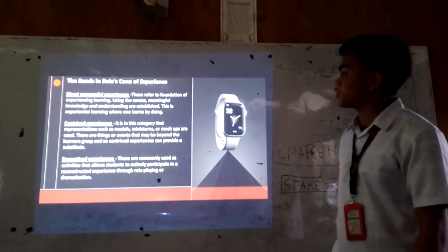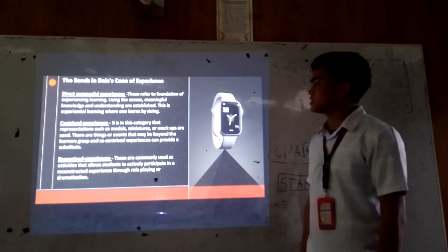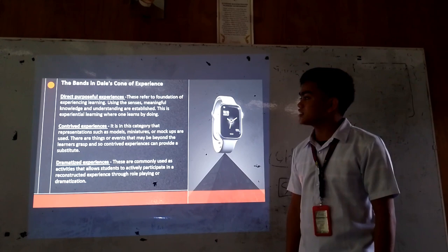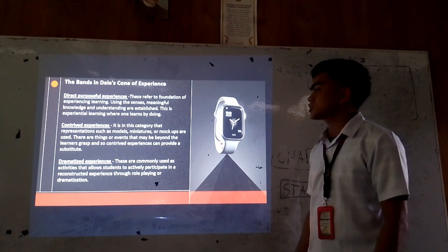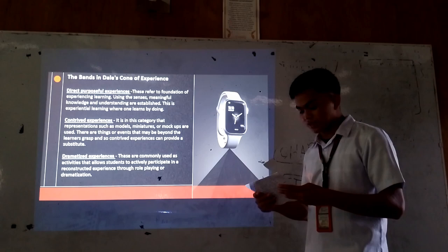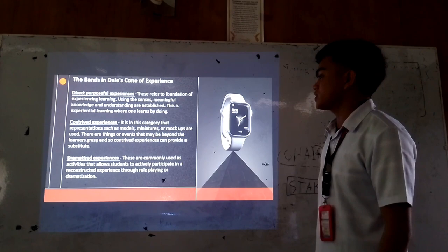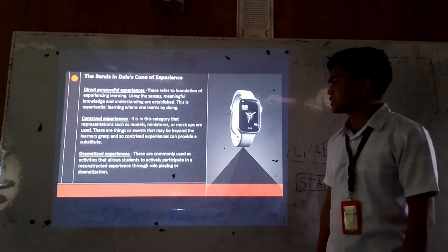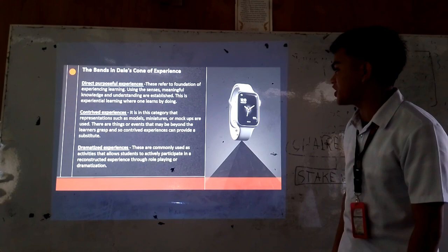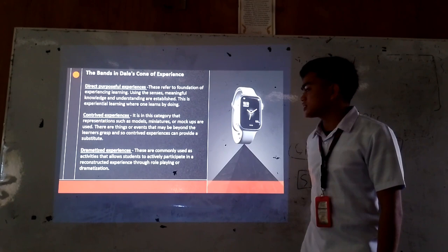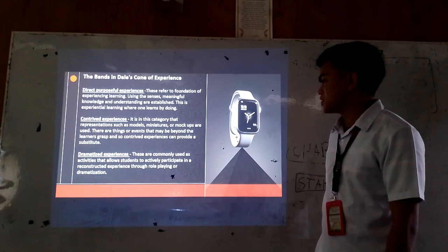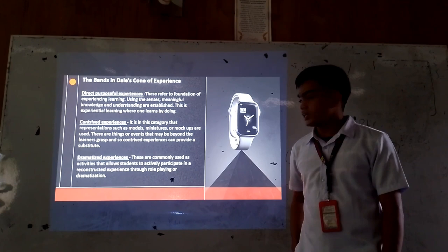First, Direct Purposeful Experiences. This refers to the foundation of experiencing learning using the senses. Meaningful knowledge and understanding are established. This is experiential learning where one learns by doing, like hands-on activities, doing the real things, and presenting real life. Next is Contrived Experiences. It is in this category that representations such as models, miniatures, or mock-ups are used. There are things or events that may be beyond the learners' grasp, so contrived experiences can provide a substitute.